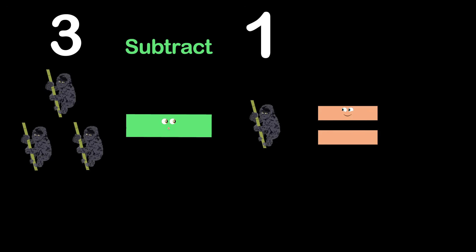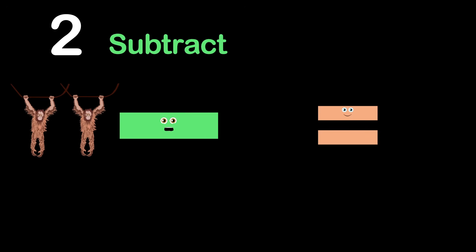Now if you have three gorillas, but two is all you need, you would subtract one from three to equal two. Now let's proceed. Here's two orangutans, but one is what you'd like. Just subtract one from two, which equals one orangutan in sight.